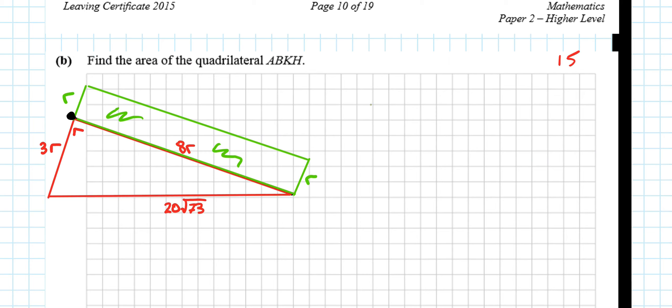We said this was r long, r long. So the area of this green bit is going to be r times 8r, which is 8r squared, which is 8 times 20 squared, which is 3,200 centimeters squared.